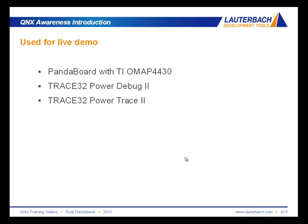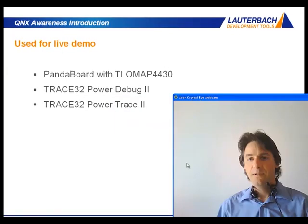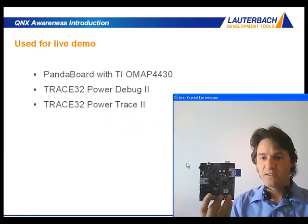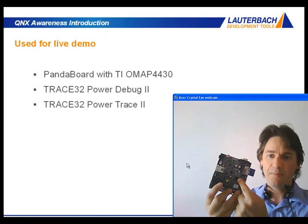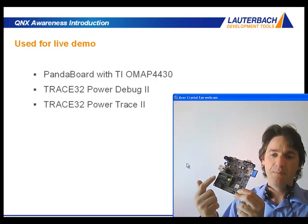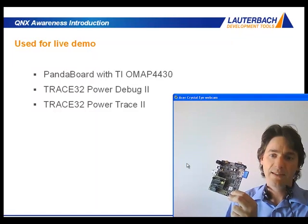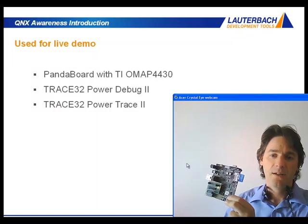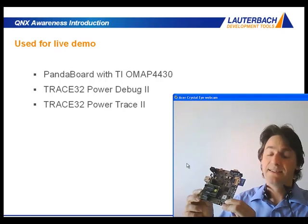I will do my live demos on a Panda board with a TI OMAP 4430. The OMAP 4430 chip has two Cortex-A9 MP core cores inside, so this is an SMP system as we will see later. Here we have our target board — it's a small board. Here in the middle is the OMAP chip. You may see there is an additional board on it made by Lauterbach just to enable real-time trace. You won't need that for debugging only, but if you want to do real-time trace, that board is needed.